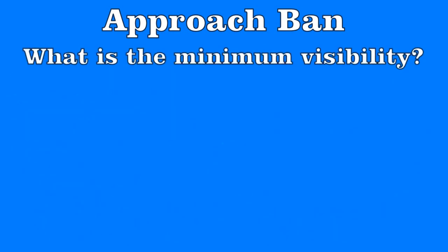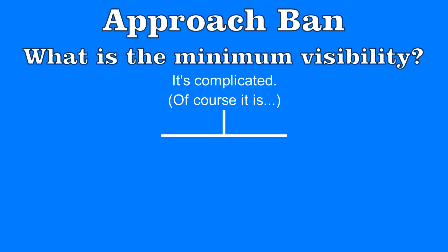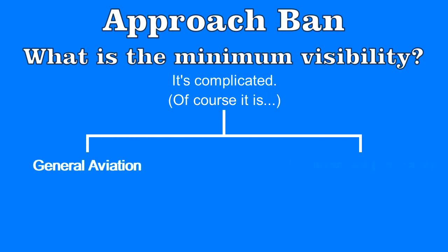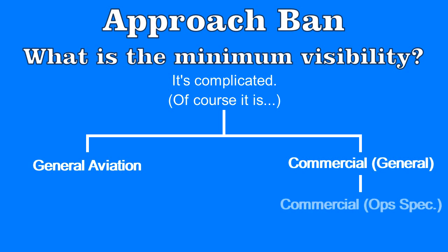So what is the minimum visibility allowed by the regulations before this approach ban kicks in? Unfortunately, like everything in the regulation world, nothing is ever simple. There are in fact three different versions of the approach ban limits in Canada depending upon the type of operation. General Aviation has one set of rules, while commercial operators have two sets — a general rule, and a better rule for operators that apply for and receive an operations specification, or OPS spec, from Transport Canada.